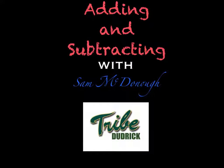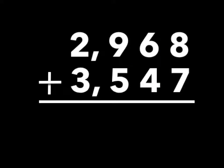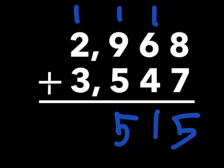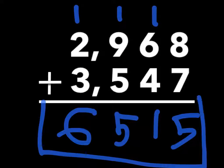I am subtracting with Sam McDonnell. So this is 15, that's 10, that's 11, this is 14, like this, and 2 plus 3 equals 5, plus 1 equals 6, so let's box that.